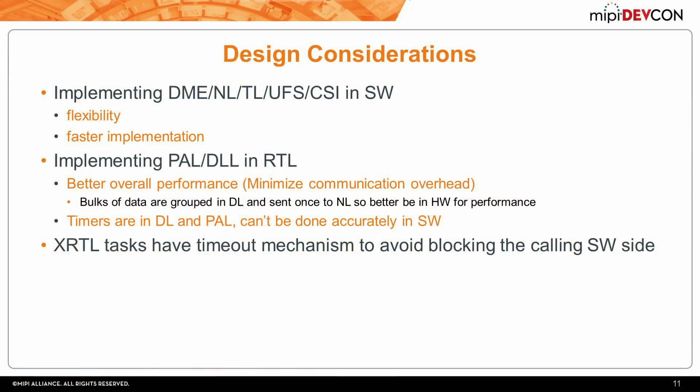We chose to implement the software layers — the upper layers — in software to give us more flexibility and to speed up the implementation, since software is much easier for this. Emulation gives us the capability to integrate software and hardware and run them in an emulated environment. If we moved the network layer to RTL, there would be a communication overhead with no gain in performance. But if we moved the data link from RTL and implemented it in software, there would be a big overhead in performance.